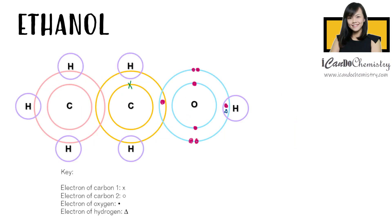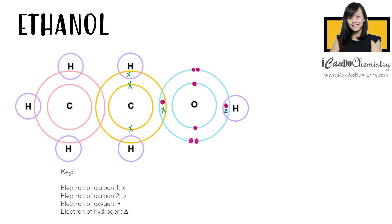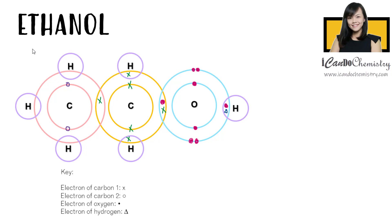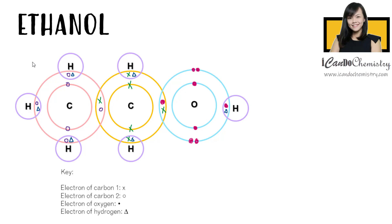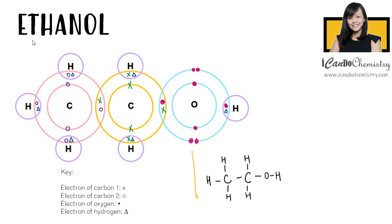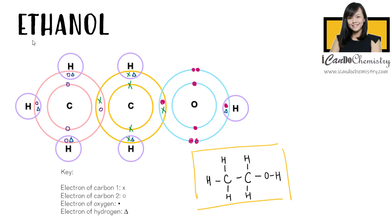Next, we have ethanol, which has two carbons. One of the carbons will share its electrons with oxygen, and each carbon will share one electron with each other. The carbons will then fulfill the octet rule by using their remaining electrons to form bonds with hydrogen. This is the dot and cross diagram of ethanol. Let's replace each electron pair with a bond. We have achieved the structure of ethanol.